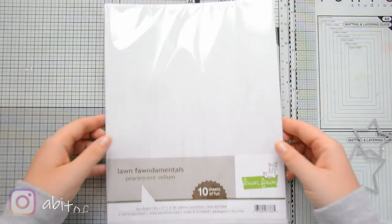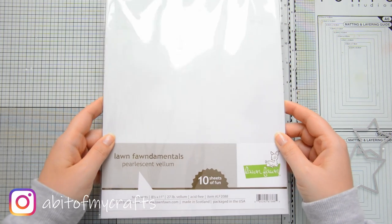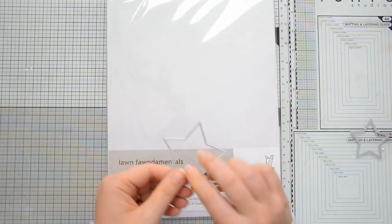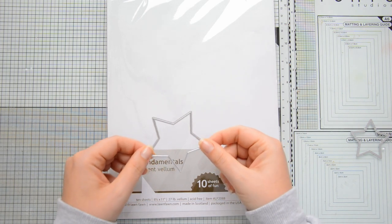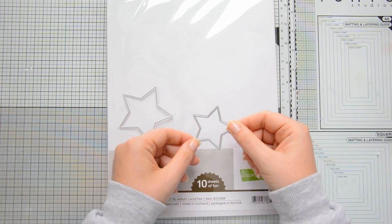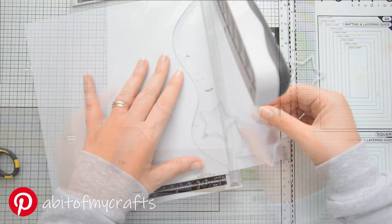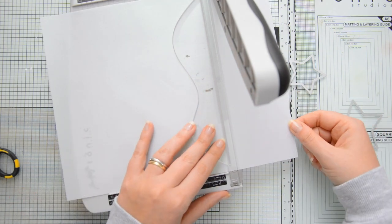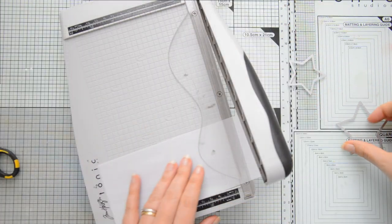To create some accents on my card I'm going to use this pearlescent vellum by Lawn Fawn which I'm going to die cut with two of the star dies in the Nested Stars set. I'm using the smallest and the second smallest dies in the set and I'm first trimming down a piece of vellum that is large enough to fit my dies.